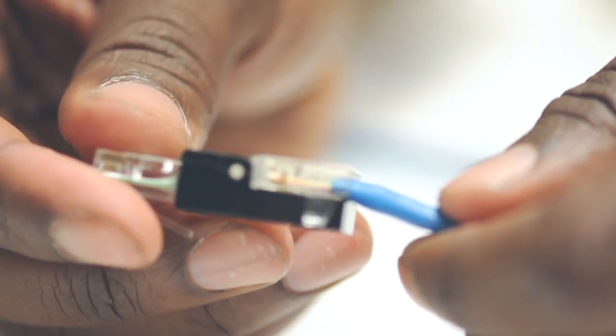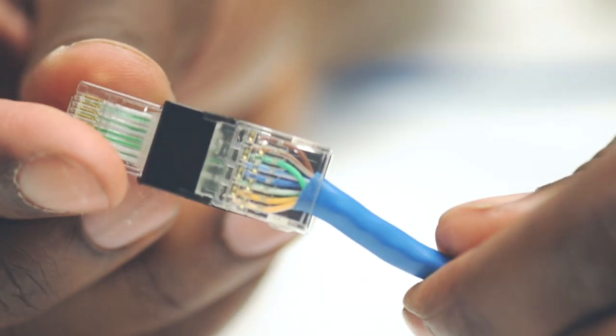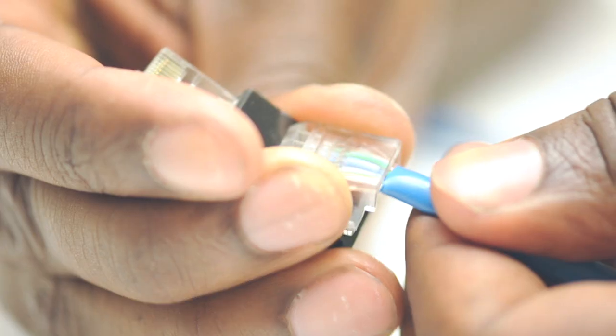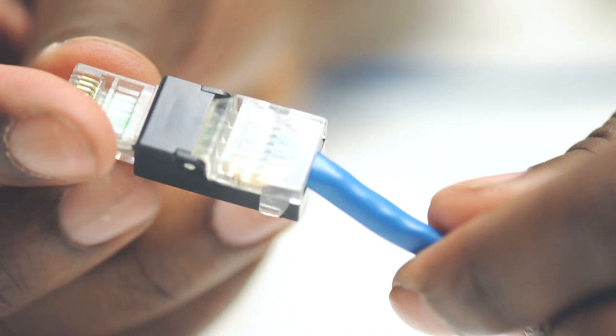Snapping down the clamshell grille secures the cables and also allows them to make the connection. To terminate the other end of the cable repeat all of the previously mentioned steps.